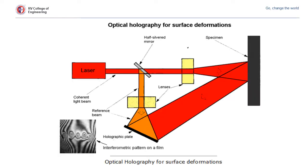In the picture you can actually see what happens in the holographic method. The laser produces a beam, the beam splitter splits the beam, and then it gets reflected from the specimen. It then forms on a holographic plate as fringes. The fringes give the pattern, and from the pattern we can understand what the deformations are and get the result from that.